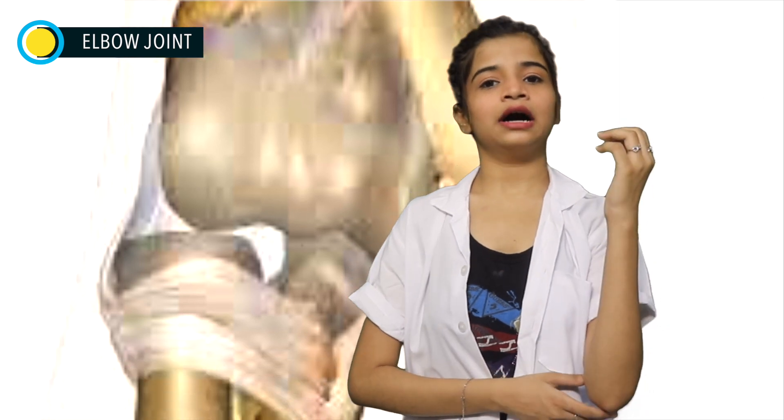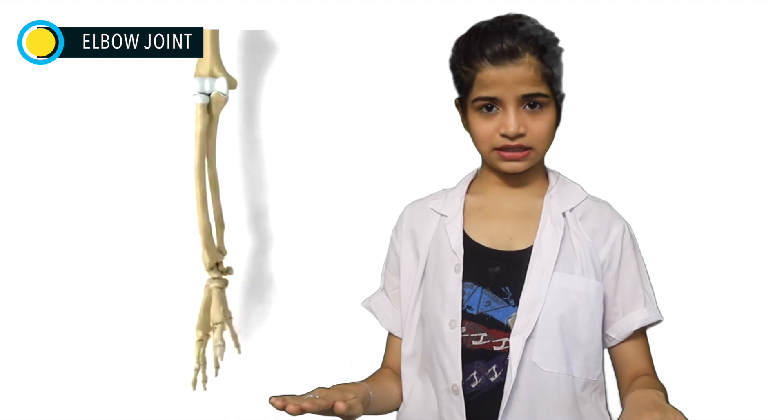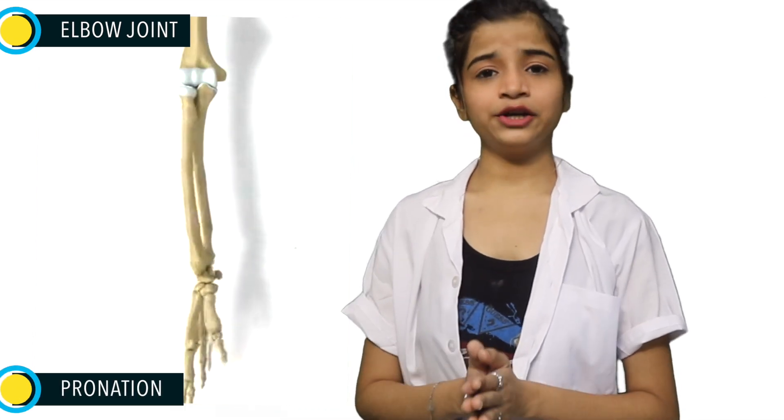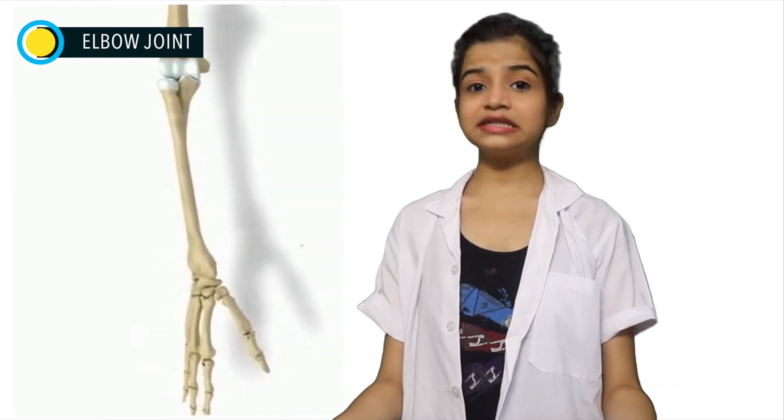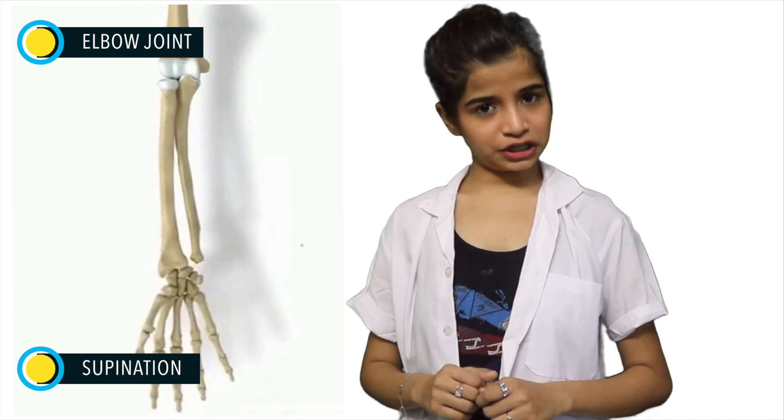Moving downwards to our forearm — here is our elbow joint, which is an important link in the arm between the shoulder and hand. The first movement in the elbow joint is rotating our arm inward like this, which is called pronation. Moving our hand outward back to its normal position is called supination.